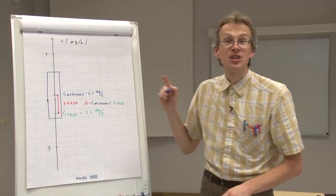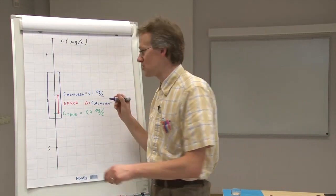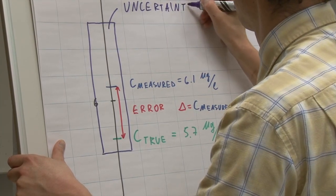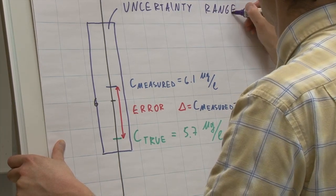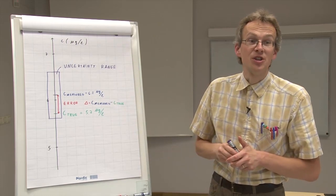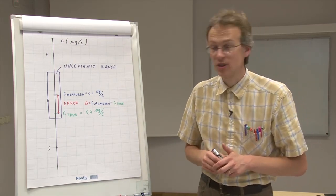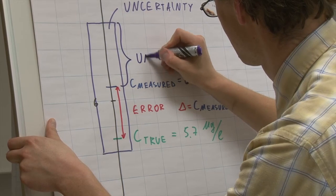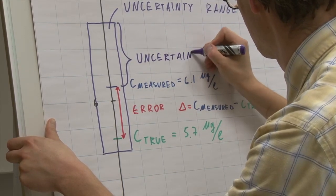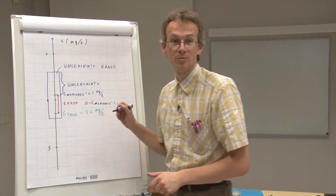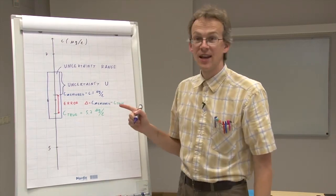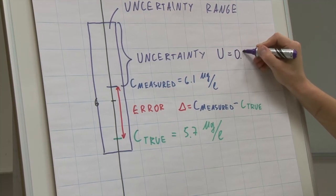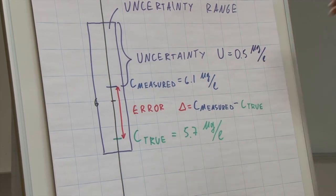So, and this range is called uncertainty range. And the half width of this range is called uncertainty. We can denote it by U. And in this case, the uncertainty is equal to 0.5 micrograms per liter.